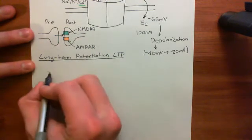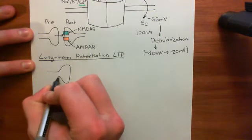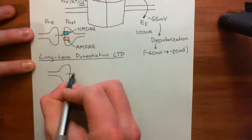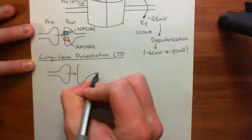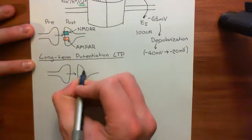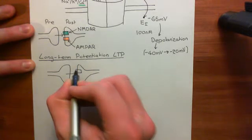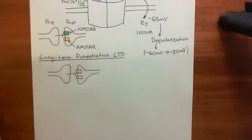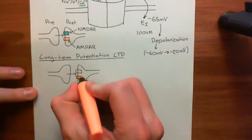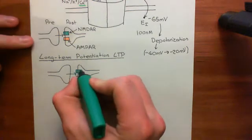Let me draw this picture out again. So we have our presynaptic neuron here, which will be releasing glutamate onto the postsynaptic neuron here, which has got these two types of receptor. We've got the NMDA receptor and the AMPA receptor — AMPA in orange and NMDA in turquoise.